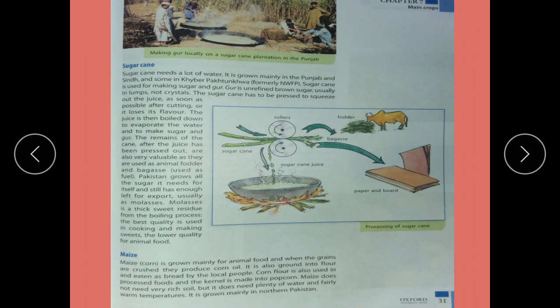Next is sugar cane. Sugar cane needs a lot of water. It is grown mainly in Punjab and Sindh, and some in Khyber Pakhtunkhwa. Sugar cane is used for making sugar and gur.